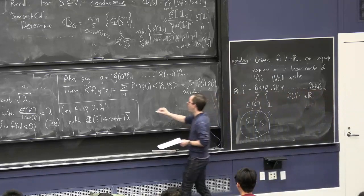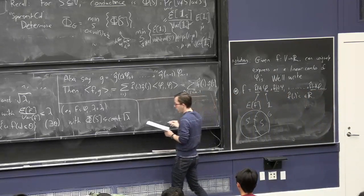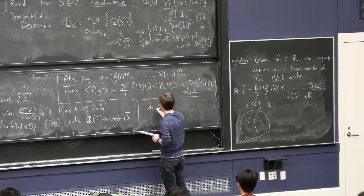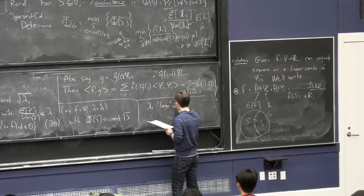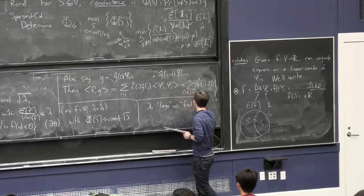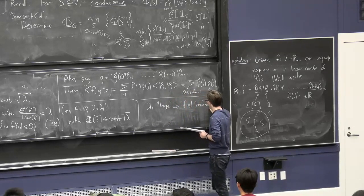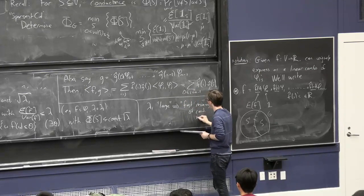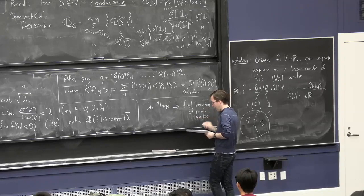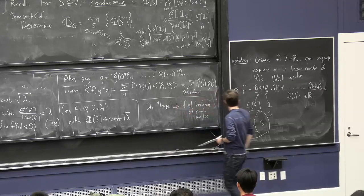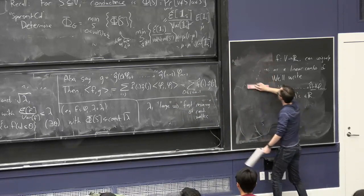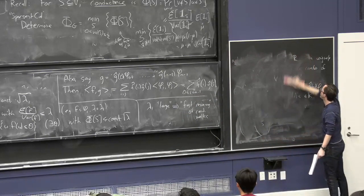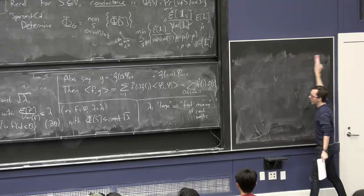The idea, or hope, is that lambda_1 being large should imply fast mixing of random walks. This is basically true, but there's one slight annoyance, basically to do with bipartite graphs.